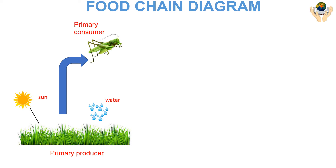The organisms that eat the primary producers are called primary consumers. Primary consumers are usually herbivorous plant eaters, though they may be algae eaters or bacteria eaters.